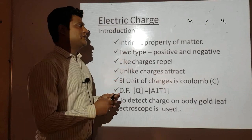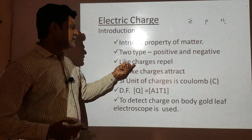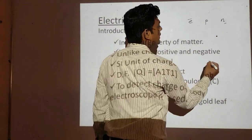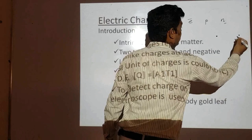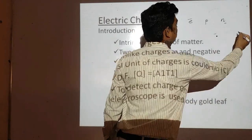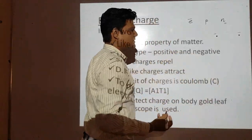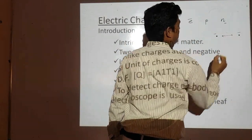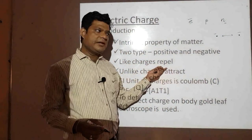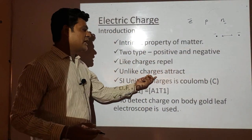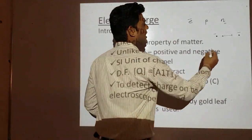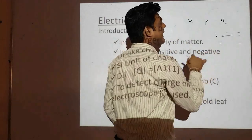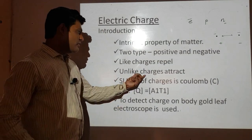The next property is that like charges repel each other. For example, an electron and another electron — both are negatively charged particles — if kept together, they will repel each other. Unlike charges will attract each other: a positive charge particle and a negative charge particle will attract each other.